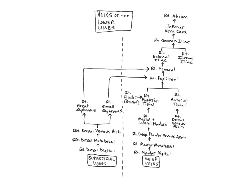Hello, anatomy students! In this video, I'm going to explain the major veins that drain the tissues and organs of the lower limbs, and the direction of blood flow through them. Similar to the upper limbs, there are an abundance of both superficial and deep veins that drain blood from the lower limbs to the heart.